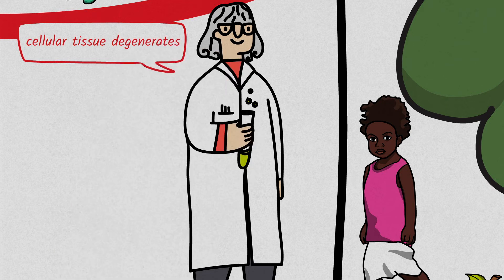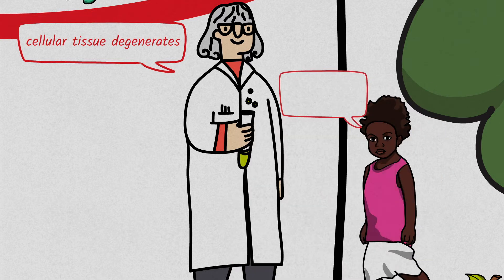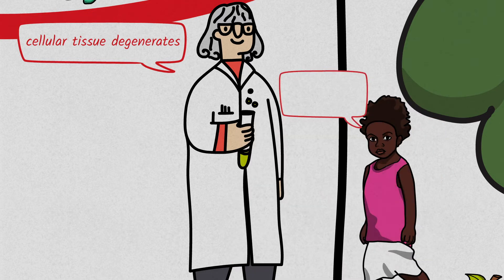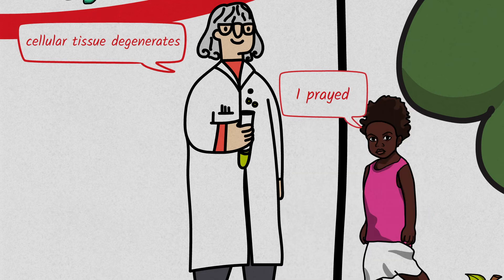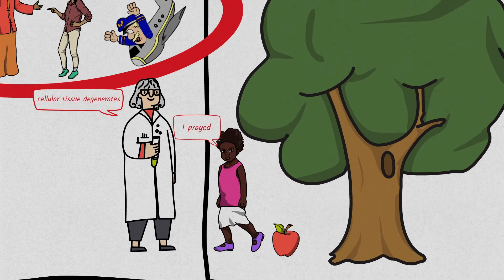On the other hand, the child says the apple fell because he was standing underneath the apple tree and he wanted to eat it and prayed for it. So that's why it fell. So who do you think is correct here?